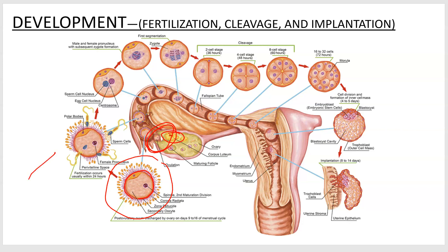If you look at the next frame, you have the sperm cells kind of attacking here. This little yellow guy made it through — you can see he's punched through the zona pellucida. The egg takes some steps after that to ensure that only one sperm cell gets in. You want one sperm nucleus and one egg nucleus, which will return you back to your diploid state of 46 chromosomes.